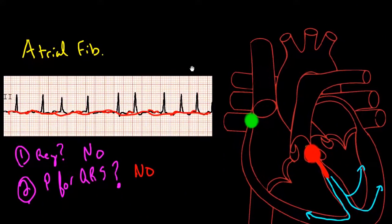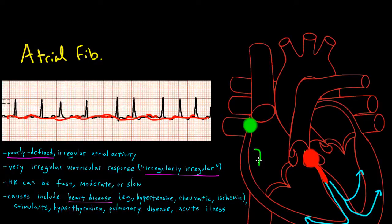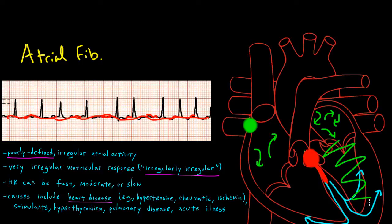In atrial fibrillation, you can imagine the electrical activity in the atria as packing peanuts. And if you took a blow dryer to it, there'd be electrical signals going every which way. Atrial fibrillation is commonly caused by structural heart disease, such as hypertensive heart disease, coronary heart disease, and rheumatic heart disease. Other causes include stimulants, hyperthyroidism, pulmonary disease, and acute illness.